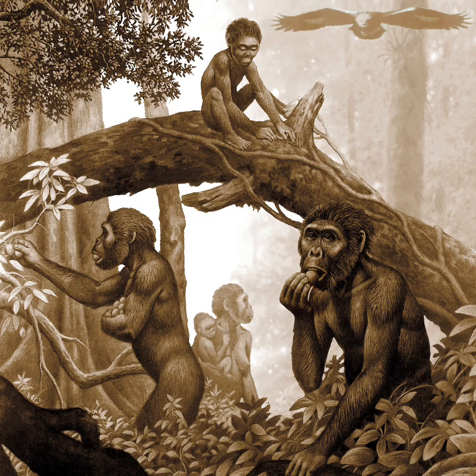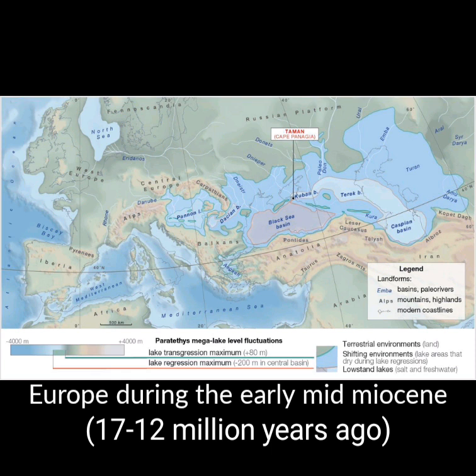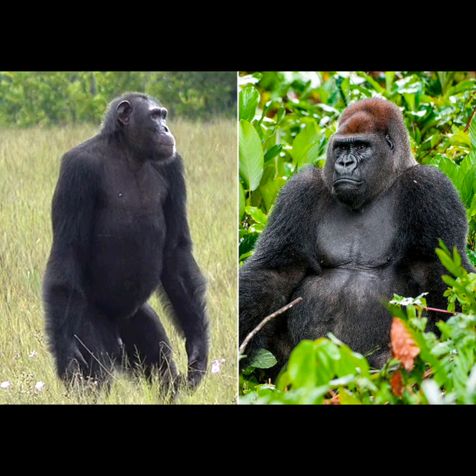Hey guys, and welcome back to All Things Past and Paranormal. In today's video, we are going to take a look at five species of ape that inhabited Europe around 13 to 9 million years ago, during the mid to late Miocene period, and discuss their connection with humans and the living African apes, which include chimpanzees and gorillas.